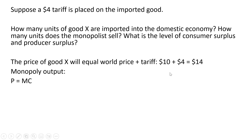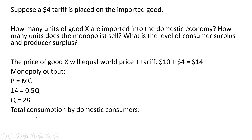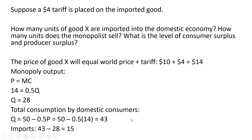In terms of monopoly output, we set $14 equal to the monopolist marginal cost. Solving for Q, the monopolist produces 28 units. In terms of total consumption by domestic consumers, we plug $14 back into the demand equation, and domestic consumers will buy 43 units, 28 of which come from the domestic monopoly. So the number of imports is 43 minus 28, or 15.